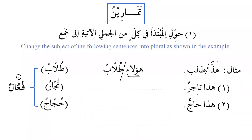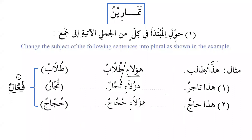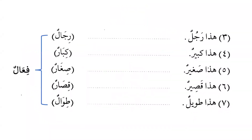هذا تاجر — this is a merchant. When we change it, هذا becomes هؤلاء and تاجر becomes تجار. So: هؤلاء تجار — these are merchants. Similarly, هذا حاج — this is a pilgrim — becomes هؤلاء حجاج. So طلاب, تجار, and حجاج are all on Pattern 1: فُعَّال.